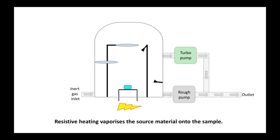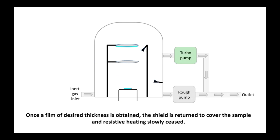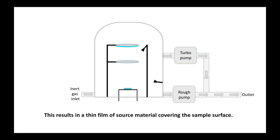Then the resistive heating vaporizes the source material onto the sample. The vaporized source sample increases on the substrate surface where it settles and condenses. Once a film of desired thickness is obtained, the shield is returned and resistive heating slowly ceases. This results in a thin film of source material covering the sample surface.